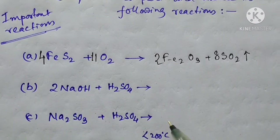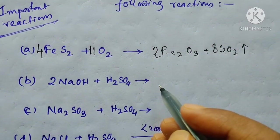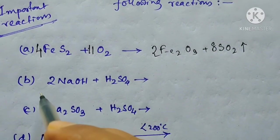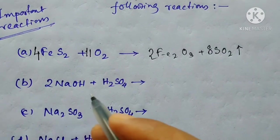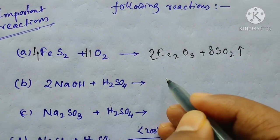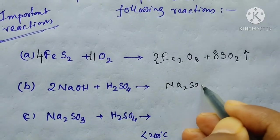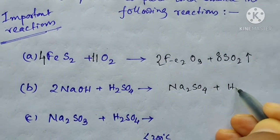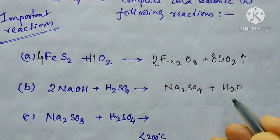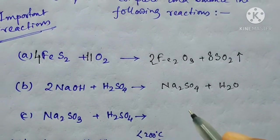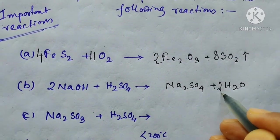The second reaction is 2NaOH plus H₂SO₄ — the 2 is already given, but if it is not given, then you do it yourself. It will produce sodium sulfate and water. This is an acid-base reaction, so salt and water will be produced. After balancing, we will get 2 for the water.